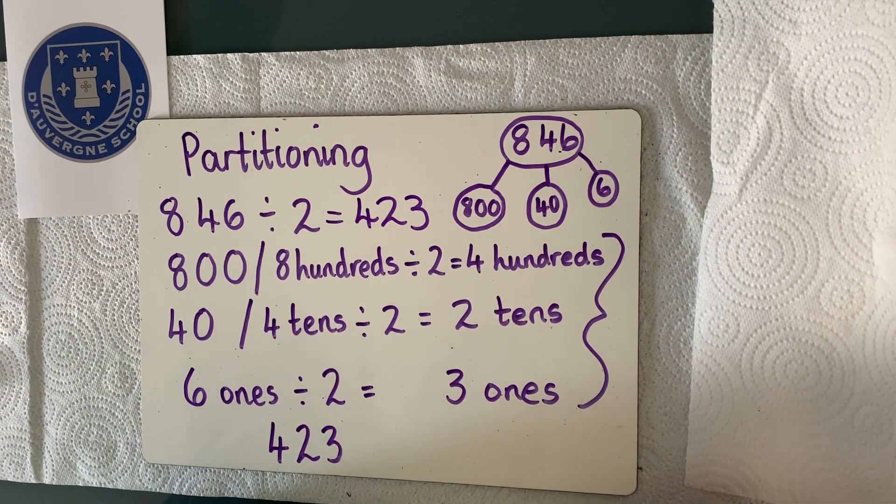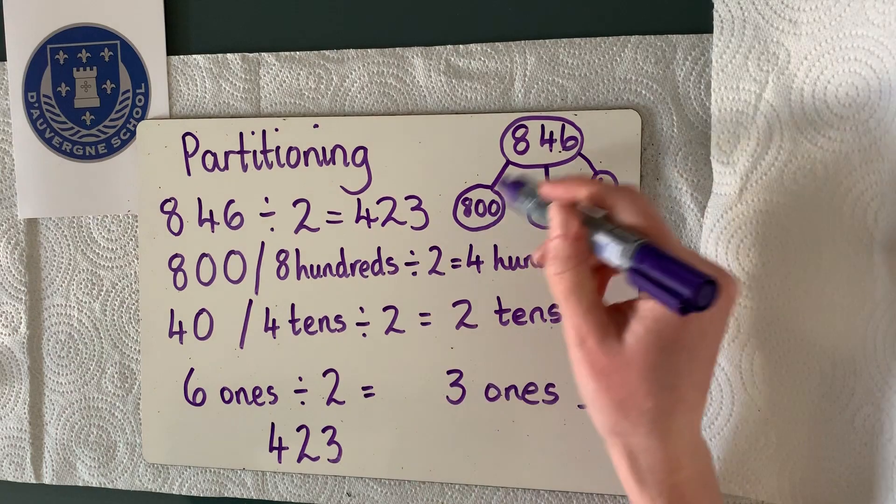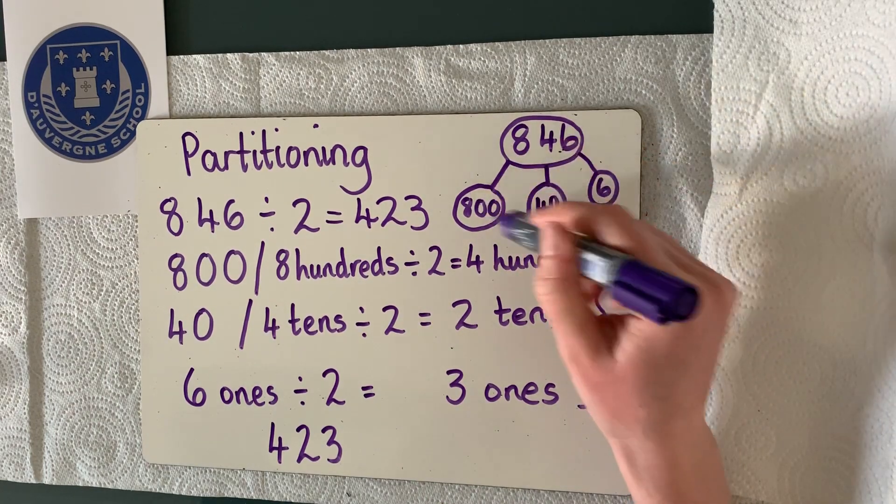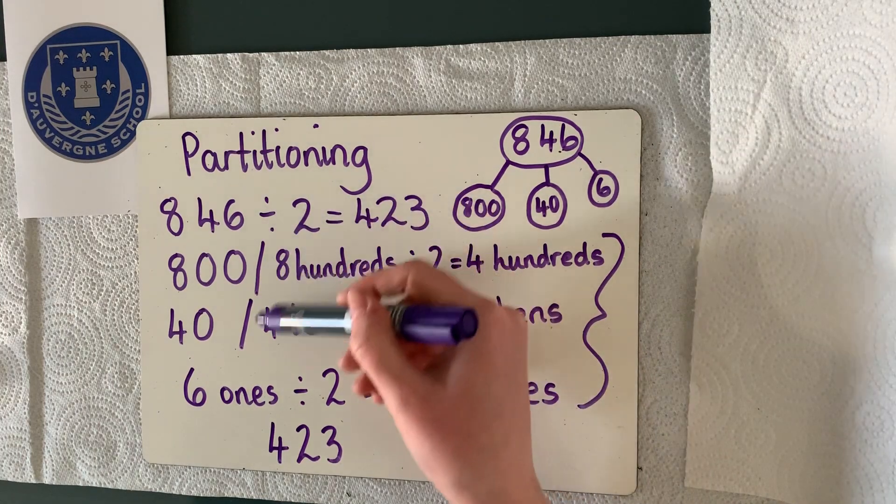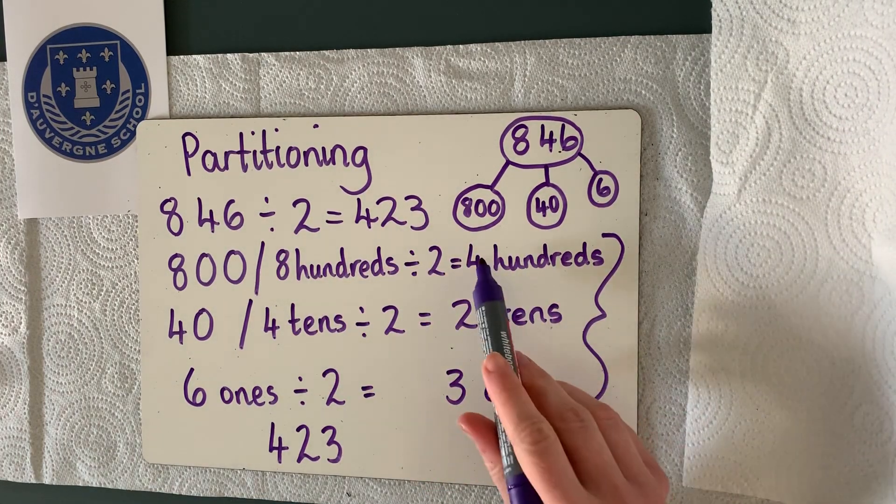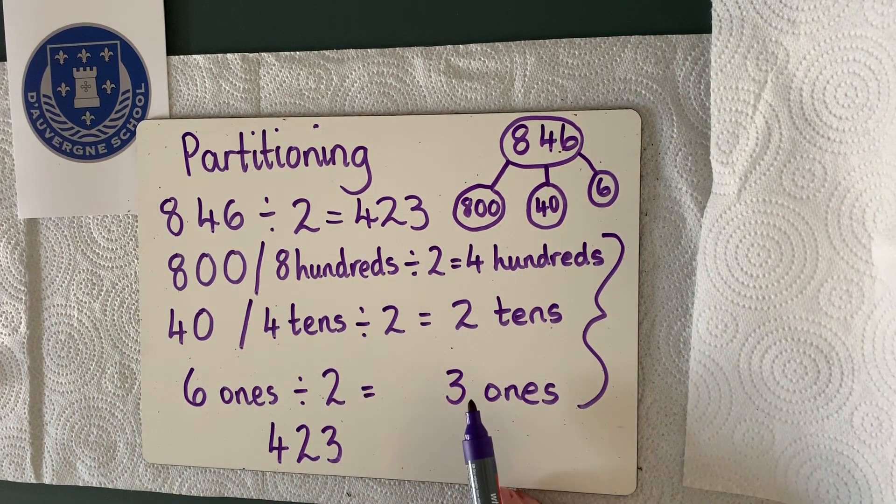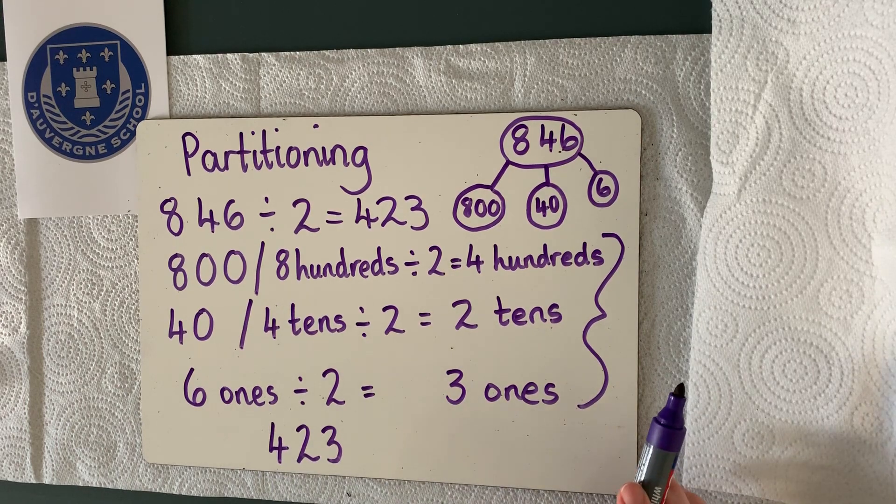Okay, so that would be our partitioning method. We are breaking up the number into our place values. We've got the hundreds, the tens, and the ones. We work them through separately. And then we put our numbers back together at the end to get our final answer.